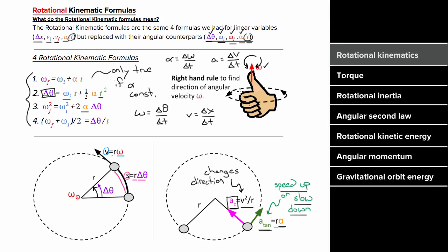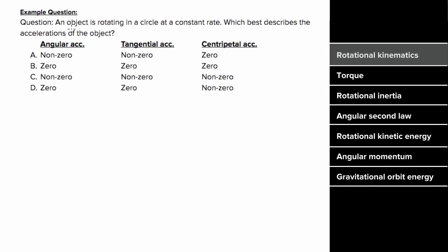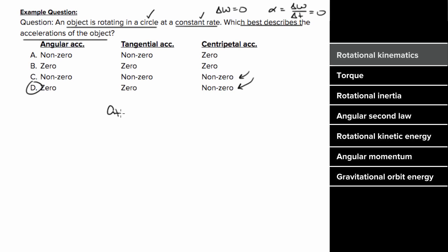Example: an object is rotating in a circle at a constant rate. Which best describes the three types of acceleration? If an object is moving in a circle at all, there has to be centripetal acceleration, so that's non-zero. If it's rotating at a constant rate, there's no change in omega, so angular acceleration is zero. If angular acceleration is zero, tangential acceleration is also zero. Tangential and angular acceleration change the speed; centripetal acceleration changes the direction.